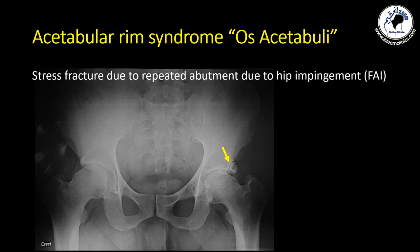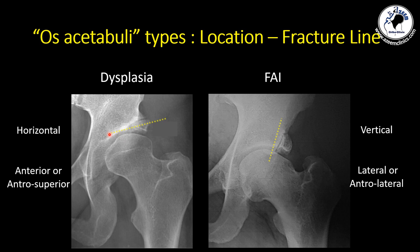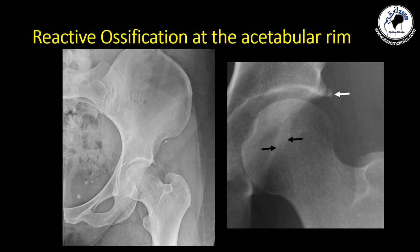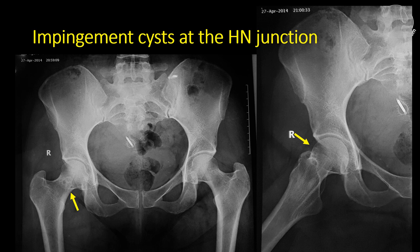Another sign pointing to abnormality in the acetabulum is looking at the acetabular rim for an os acetabuli. There are two types: one belongs to acetabular dysplasia, where the fracture line is horizontal; and one with a vertical fracture line, which is due to repetitive abutment between excess bone and the prominent rim, causing a vertical rim fracture. You can also see reactive ossification of the labrum at the rim due to repetitive abutment, and on the femoral side, an impingement cyst at the head and neck junction located anteriorly and sometimes superiorly.